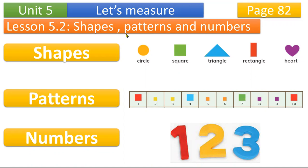We learned three things in lesson 5.2 — this is the second lesson in unit 5. Don't forget page 82 and page 83. Today we learned three things: what is a shape, what is a pattern, and what is a number. Let's look at what the shapes are.